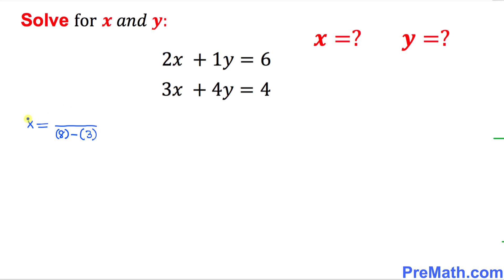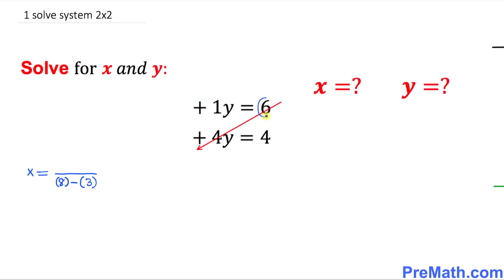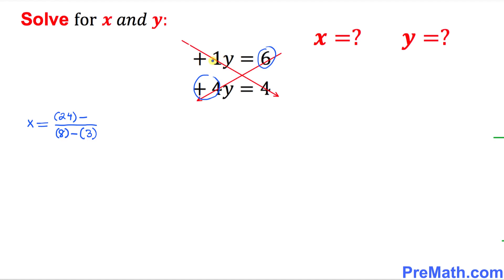Since we are solving for x, we are going to hide the x variables. Now we are going to cross multiply once again, this time from right to left. 6 times positive 4 is going to give us 24, written on top in parentheses, then minus. The other way around, positive 1 times 4 gives us positive 4. Simplifying: 24 minus 4 is 20, divided by 8 minus 3 is 5. That means x equals 4.